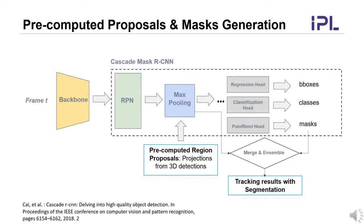In the second stage, we project each frame of the 3D trajectories onto the 2D image and treat them as pre-computed region proposals for a Cascade Mask RCNN-based network with a PointRend head to generate the mask results. For those objects not detected by the 3D detector from the LiDAR point cloud but detected by the 2D object detector from images, we use the Hungarian algorithm to merge these detections with existing trajectories.